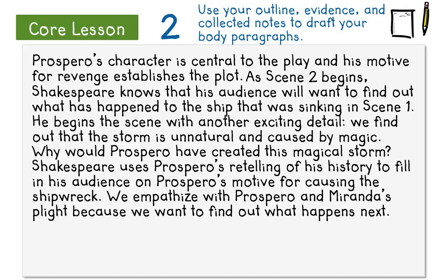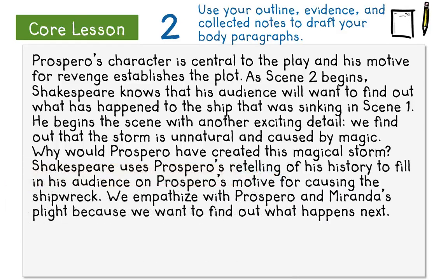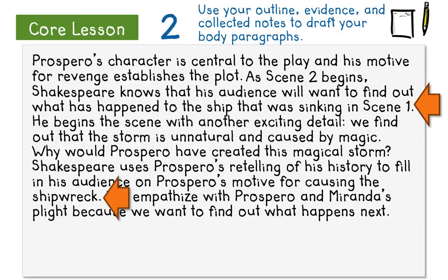I notice I haven't included any specific pieces of evidence from the text in my draft here, so I'm going to look back at the two pieces of evidence I gathered before. I think some quotes from the first two lines in this piece of evidence would be perfect right after my sentence about the ship sinking in Scene 1, because Miranda makes it evident that her father caused the shipwreck. And in the next set of evidence, these three lines show that Prospero has a motive for revenge and that it causes a shipwreck carrying his enemies. So I'll put this in the sentence where I state that Shakespeare uses Prospero's retelling to establish the plot.